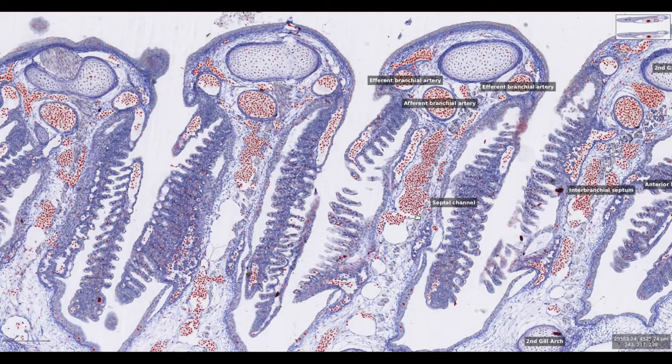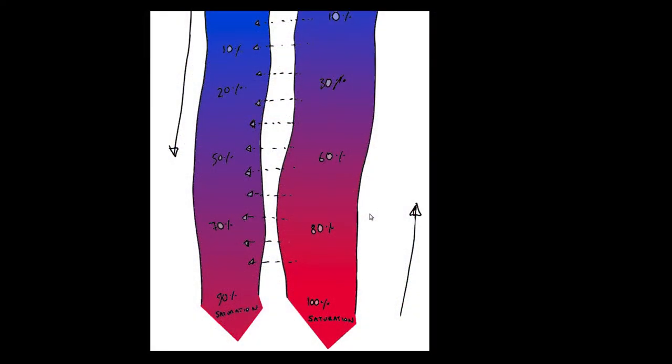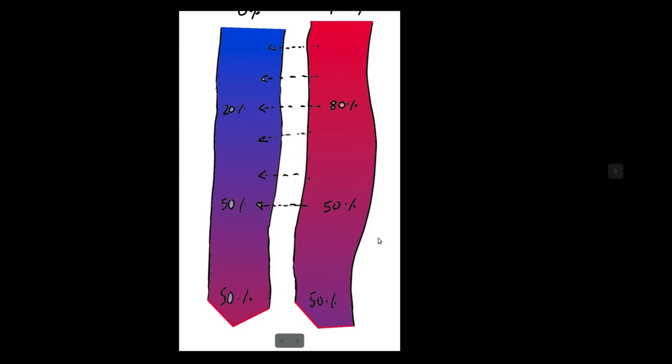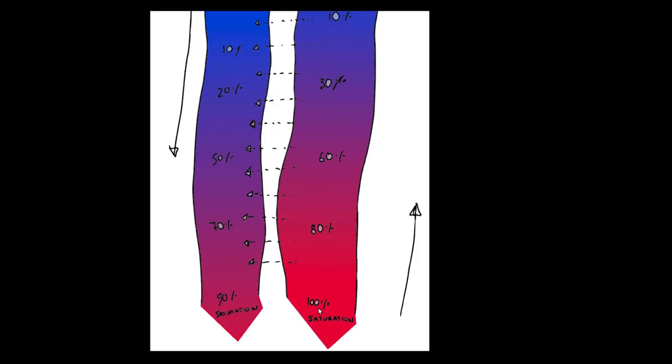Within the lamellae, blood and water flow in opposite directions, forming a counter-current exchange system. This ensures that the concentration gradient for oxygen is maintained all along the system. If we imagine that fully oxygenated water flowed in the same direction as blood—in this case down the screen—only a maximum of 50% of the oxygen would be transferred, as then the concentration of oxygen in the water and the blood would be the same and there would be no concentration gradient allowing for diffusion. In a counter-current system, despite the fact that the blood is gaining oxygen, it is constantly passing water with a higher oxygen concentration, so the concentration gradient is maintained and gas exchange will still occur.